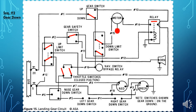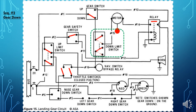Once the gear begins to come down, the up limit switch will change position. Once the landing gear is fully extended, the down limit switch will change position, opening the circuit between the bus and the gear motor and shutting the gear motor off. Just prior to landing, the throttle is further retarded and the throttle switch will close. Once the aircraft lands and the weight of the aircraft sets upon the landing gear, the gear safety switch will change position.